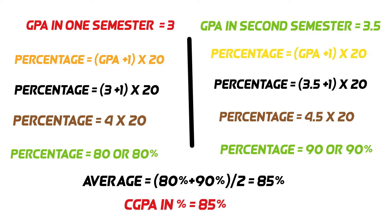Now we find the average of these two converted GPA percentages. In this case only two semesters, we add 80% and 90% and divide with 2. Here we get 85% CGPA percentage. In this way, we find a CGPA percentage.